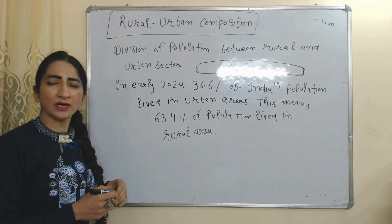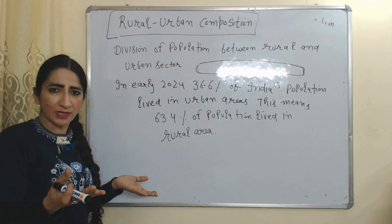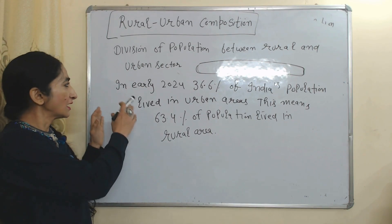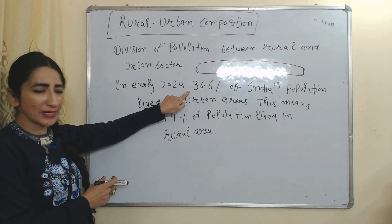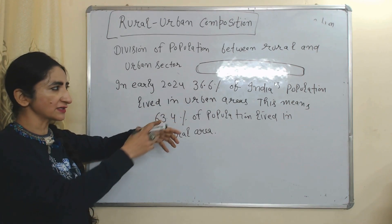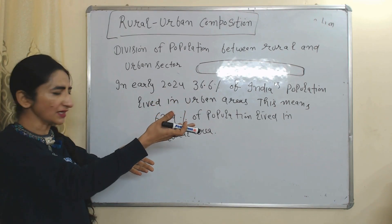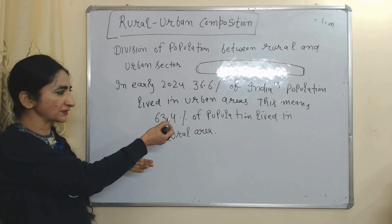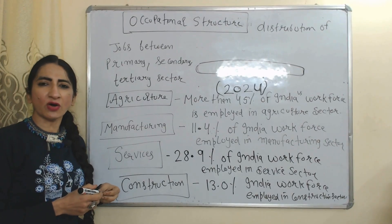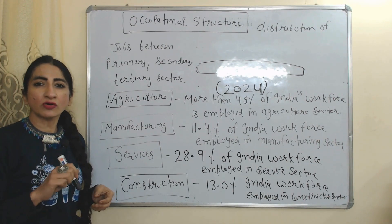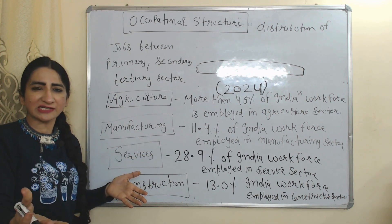The next feature is rural-urban composition, meaning the division of population between rural and urban areas. In early 2024, 36.6% of India's population lived in urban areas, meaning the remaining 63.4% of the population lived in rural areas.